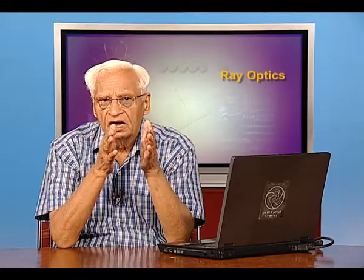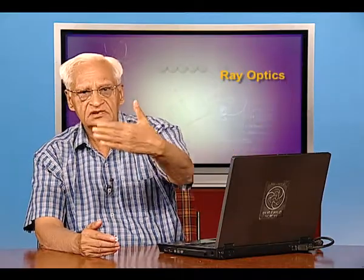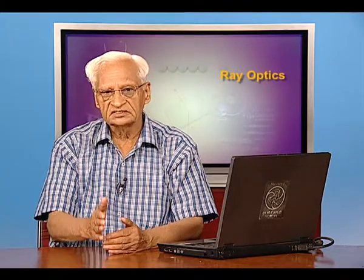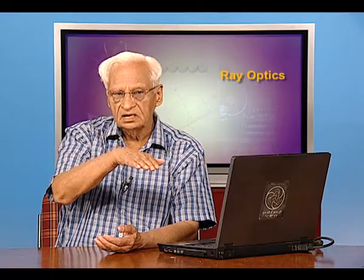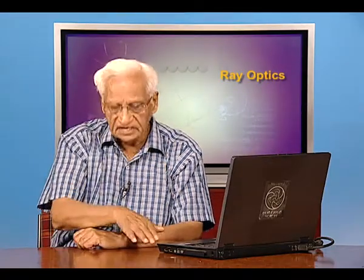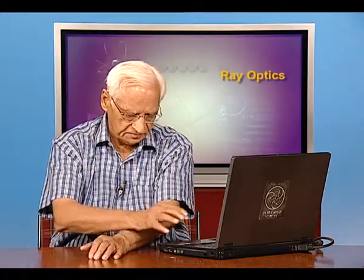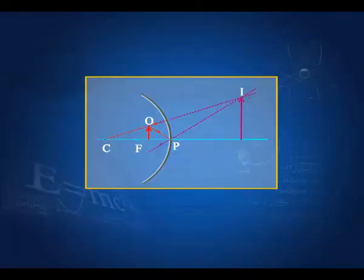We are using Cartesian convention. The light comes from the left and all distances measured to the left are positive. All distances measured to the right are negative. All distances measured upward from the axis are positive. All distances measured downward from the axis of the mirror are negative. This is the convention we are using, and this applies to the formation of an image when the distance of the object from the mirror is less than the focal length.